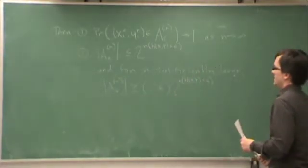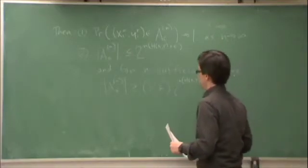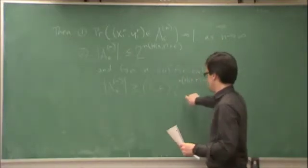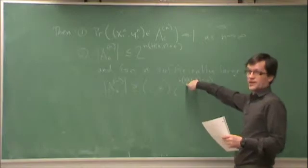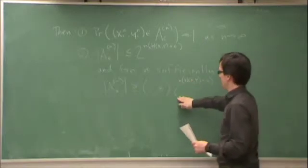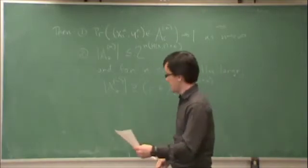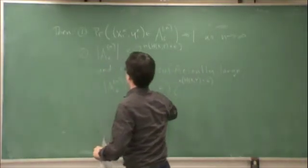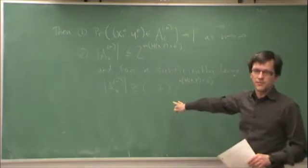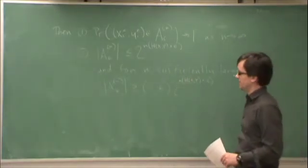Statement 2, roughly speaking, the cardinality of the jointly typical set is somewhere around 2 to the n times the joint entropy between x and y. And, thirdly, so these two statements are quite similar to what we had before for the asymptotic equipartition property. Third statement is a little different.